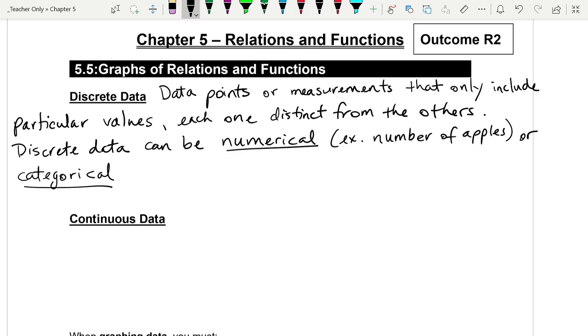Discrete data can be numerical, for example, number of apples. Or what kind of data isn't numerical? We call it categorical. Anybody think of an example of categorical data?